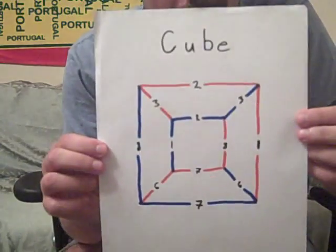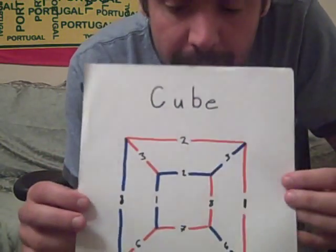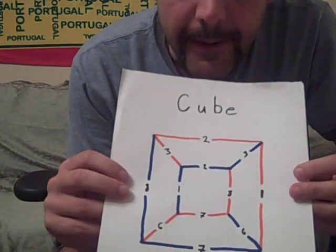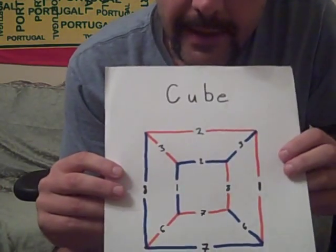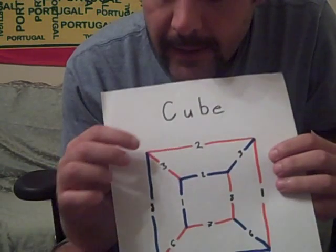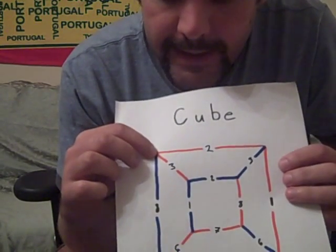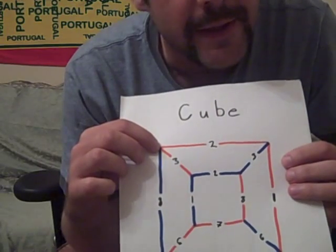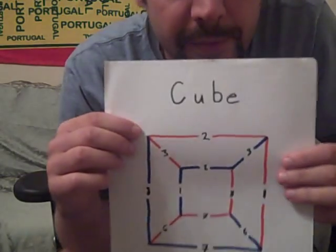Today I'm going to make a fairly simple design — a cube. In the cube, we have 12 segments, and unfortunately every vertex has degree 3, which causes a lot of problems. We've got 8 vertices of degree 3.